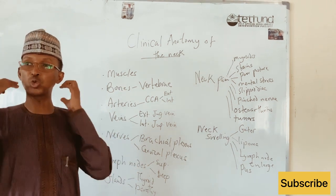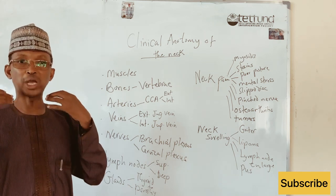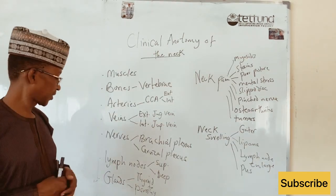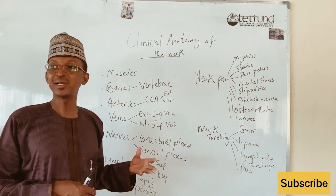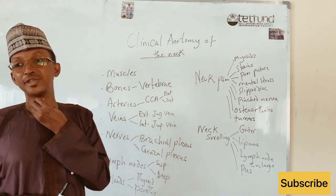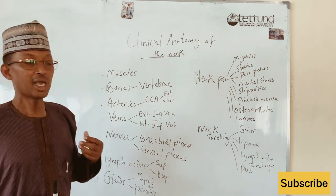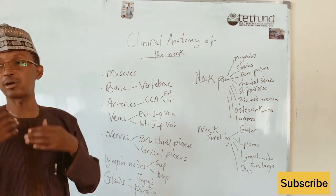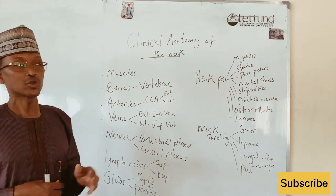We also have lymph nodes in the neck, divided into a superficial group and a deeper group of cervical lymph nodes. Similarly, we have glands — the two most important being the thyroid gland, located anterior to the thyroid cartilage of the larynx, and the parathyroid glands at the back of the thyroid gland. These are the important structures to consider in the clinical anatomy of the neck.